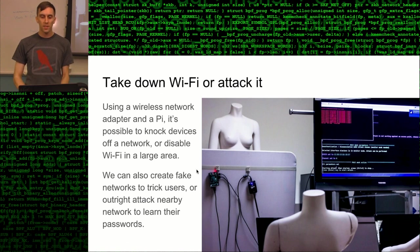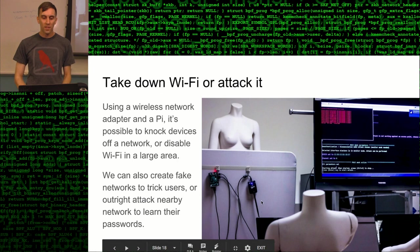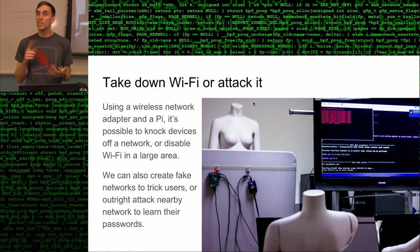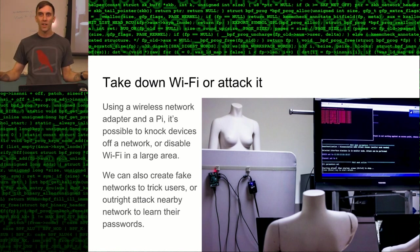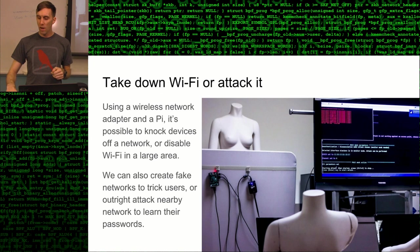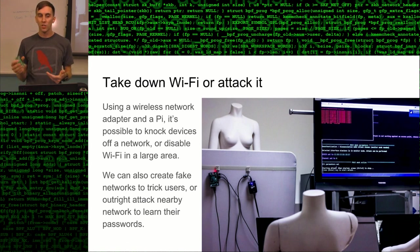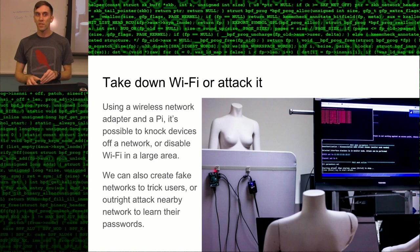Another experiment: in the fashion district I showed that a Raspberry Pi connected to a wireless network adapter could take out either a specific security camera attached to Wi-Fi or an entire city block's worth of wireless networks. It scans all available channels, finds communicating devices, adds them to a blacklist, and then multiple times per second sends a de-authentication request to every single one — constantly bombarding them with requests to disconnect from the network seemingly from the network they're connected to.